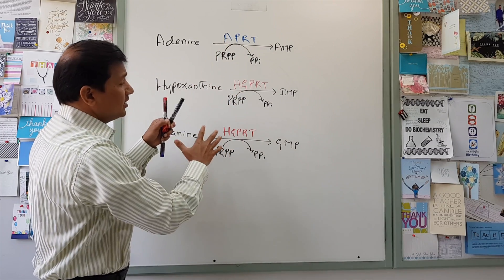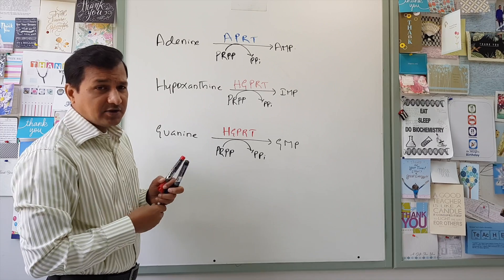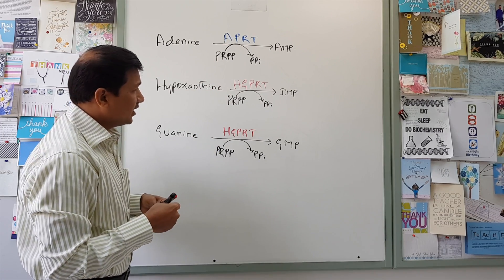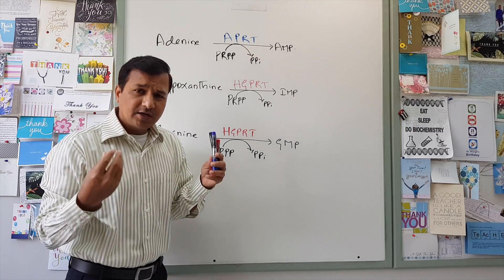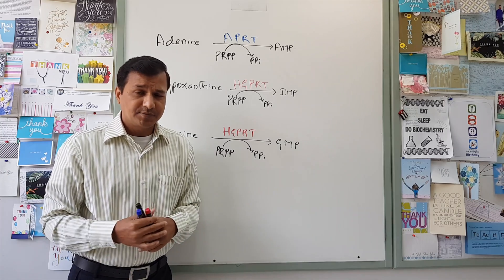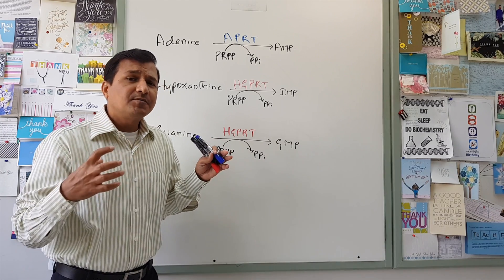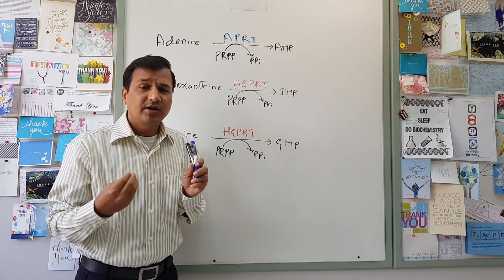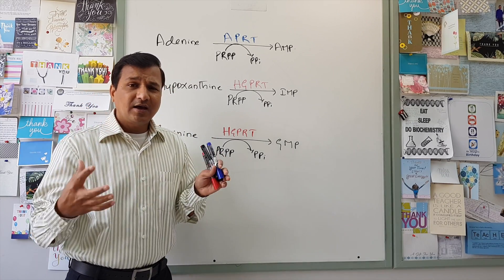So these are one of the purine salvage enzymes, APRT and HGPRT. Now, what if there is a mutation in a gene that is coding for HGPRT? What if this enzyme is completely absent? So the complete absence of HGPRT enzyme in the cells will give rise to Lesch-Nyhan syndrome.